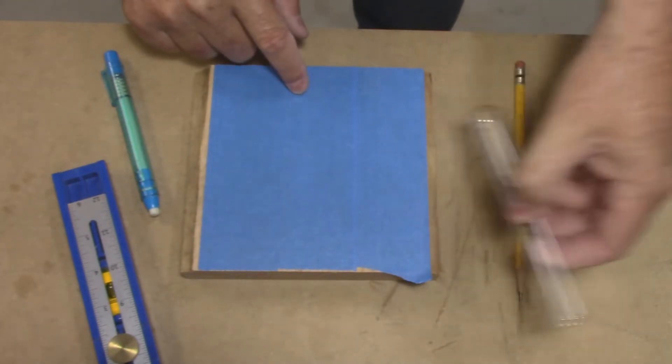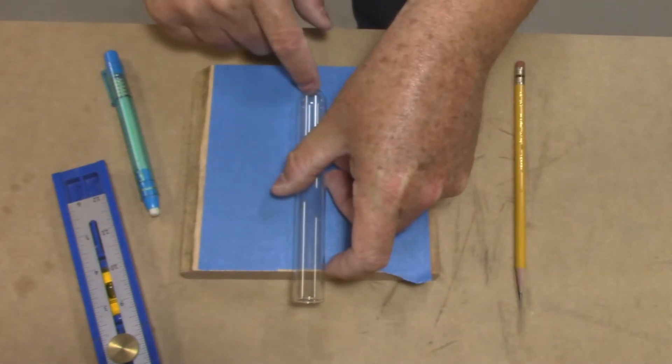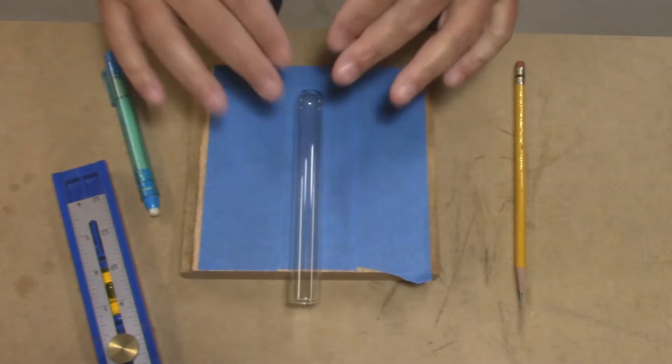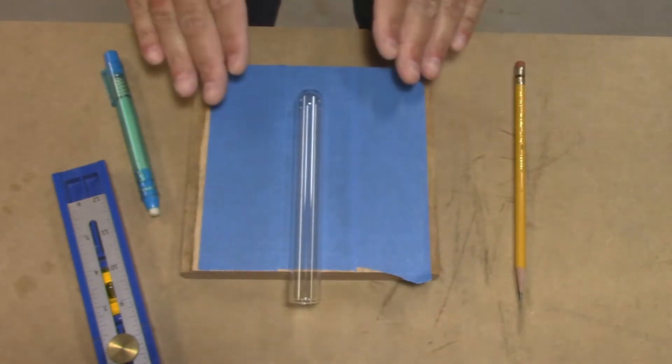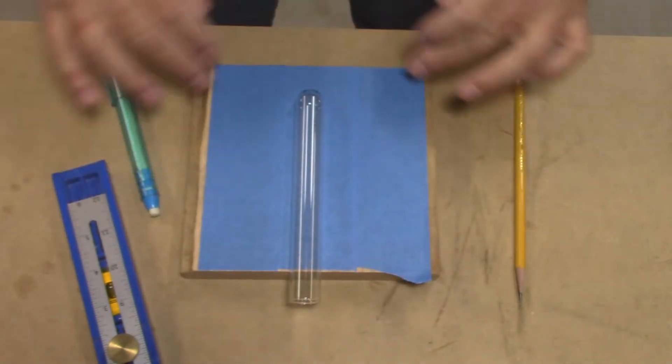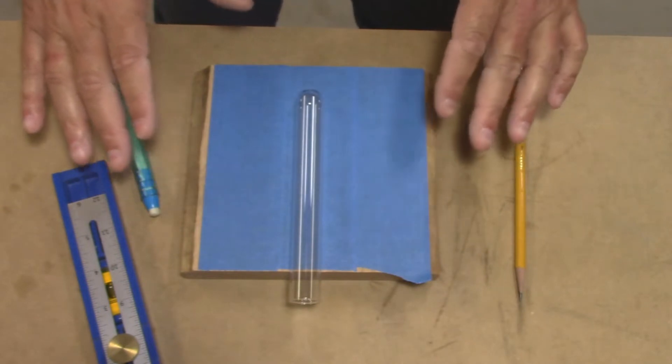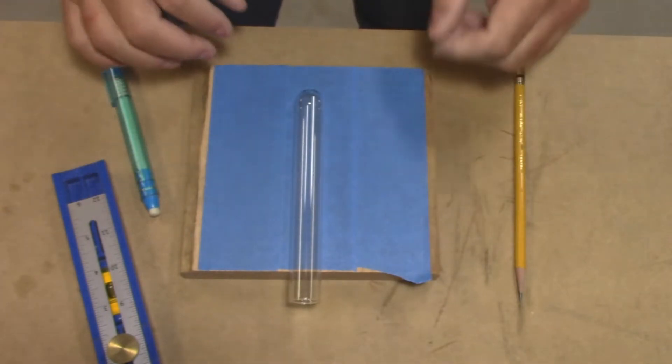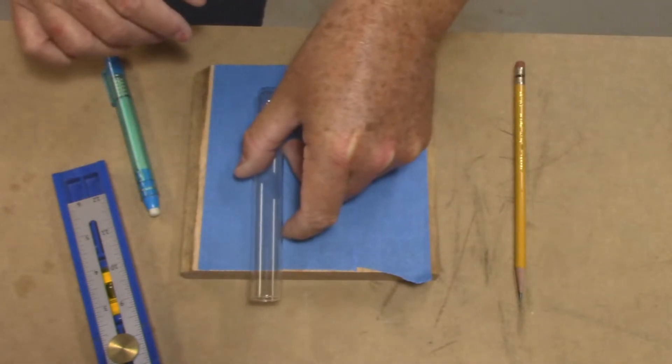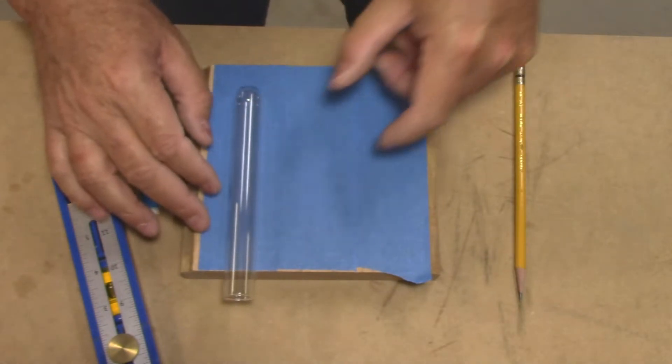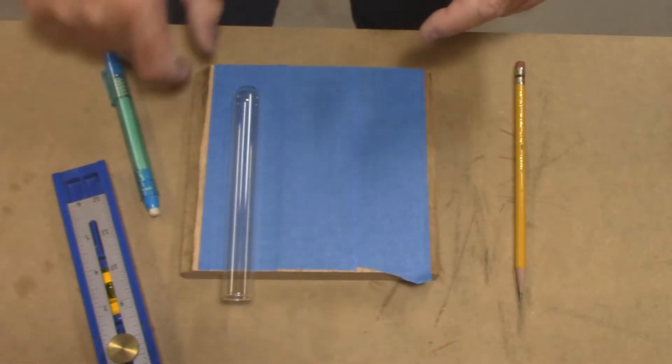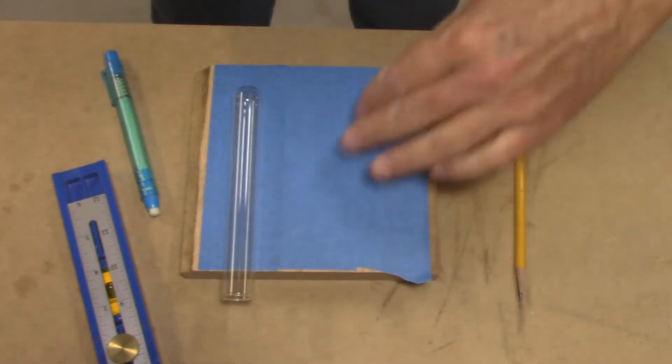I'm going to measure up one inch so my test tube will stop right here. I don't think I want the test tube in the center because by the time I cut out the outside I think it's too much like a laboratory flask. So I'm going to offset the test tube and keep this edge relatively straight and make all my curves over here.